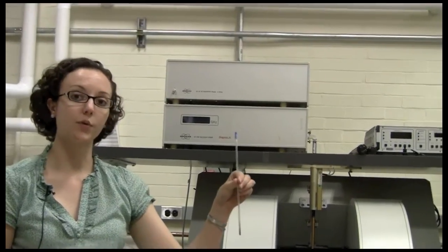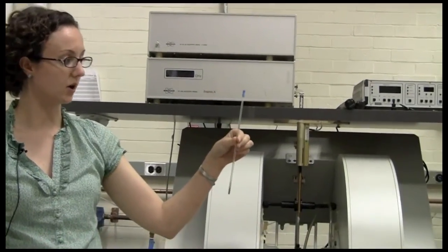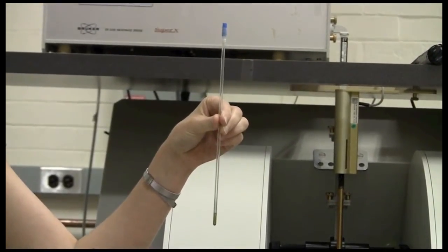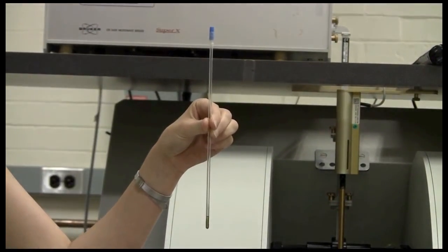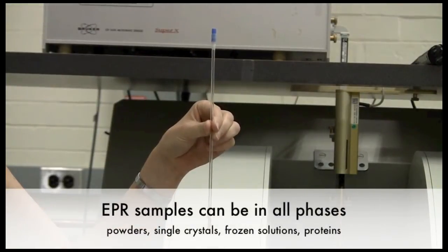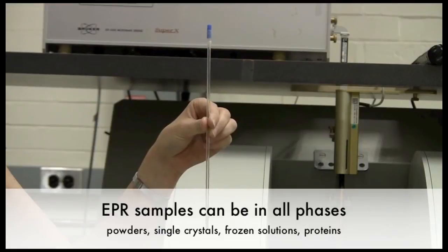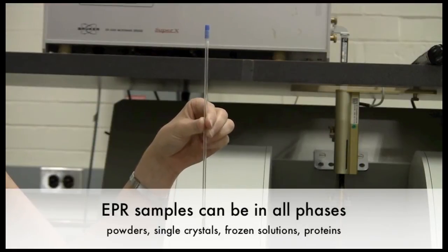The samples for an EPR spectrum are prepared in these long skinny EPR tubes that are made of quartz to remove paramagnetic impurities. EPR samples can be either liquids or solids or gases and can include everything from powders to single crystals, frozen solutions or protein samples.